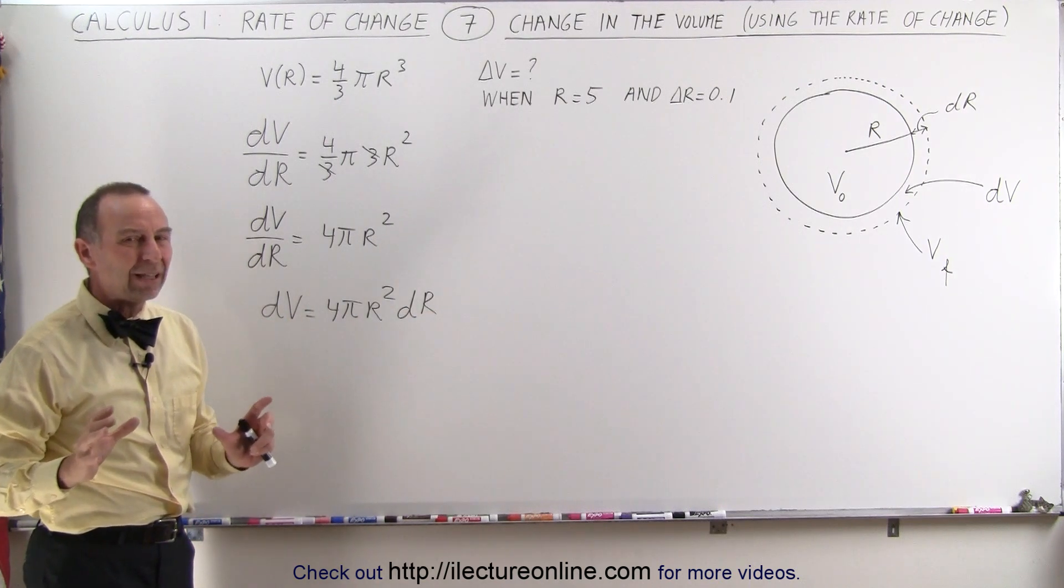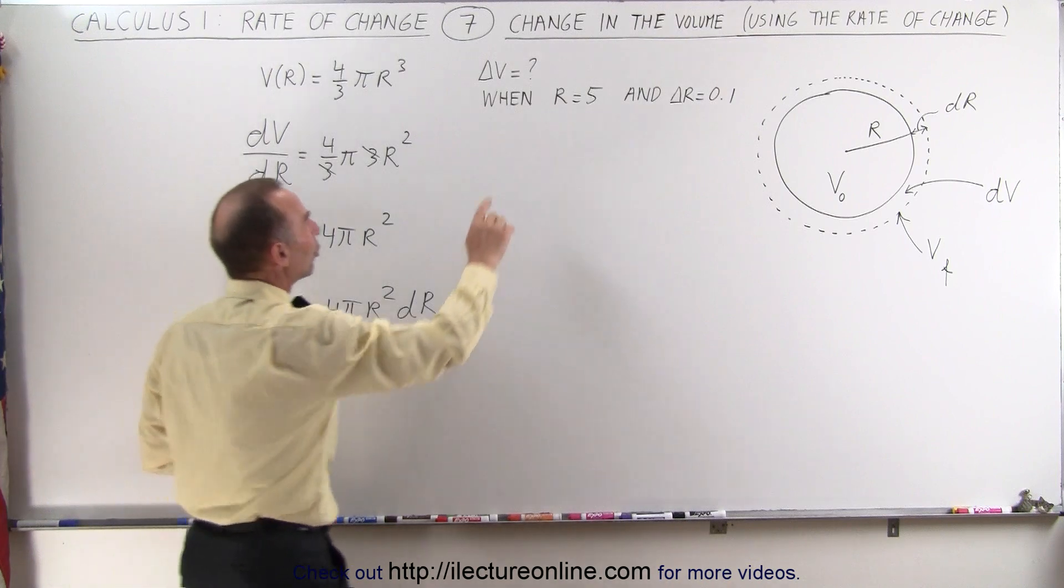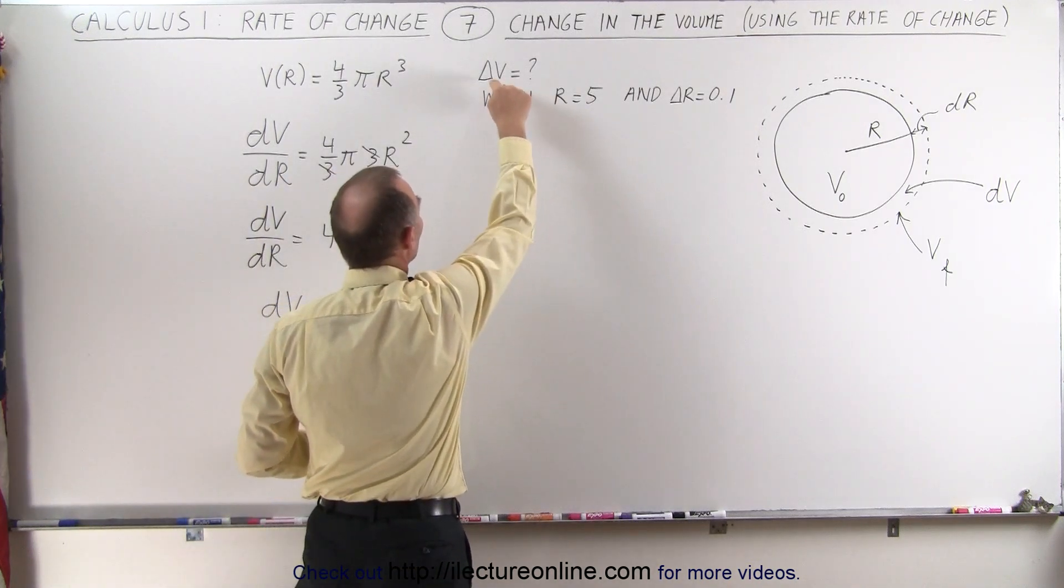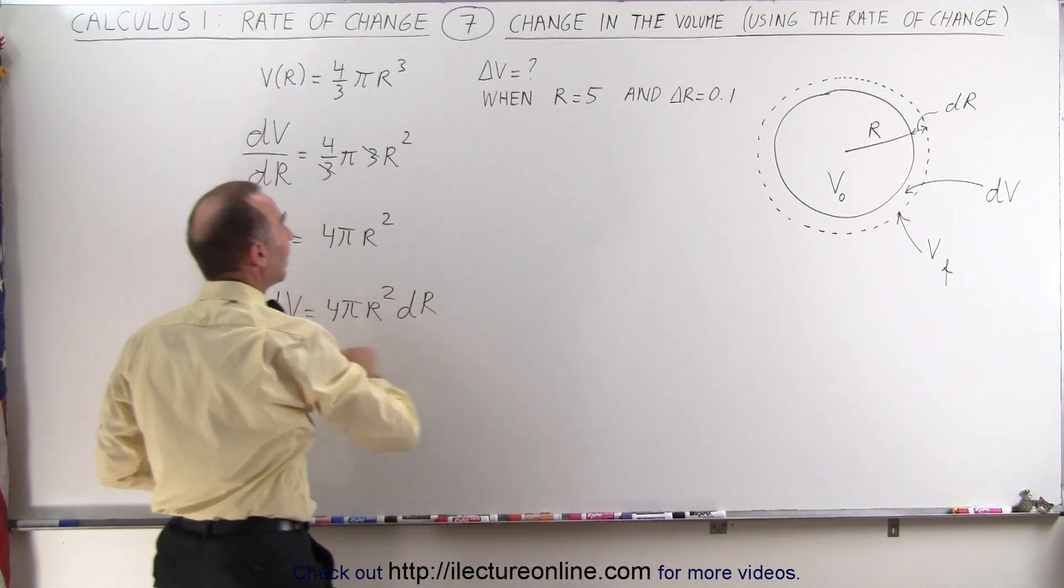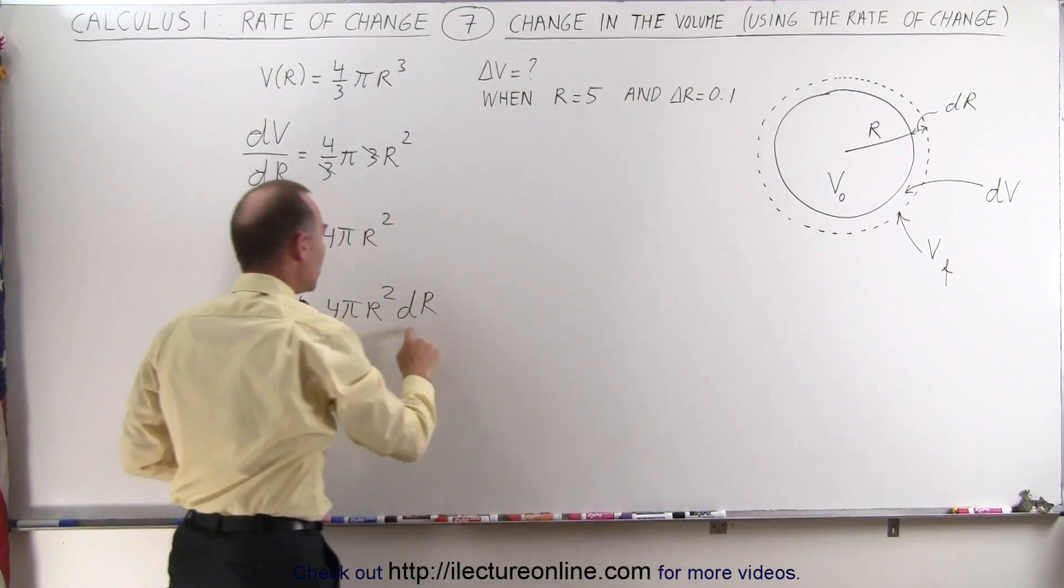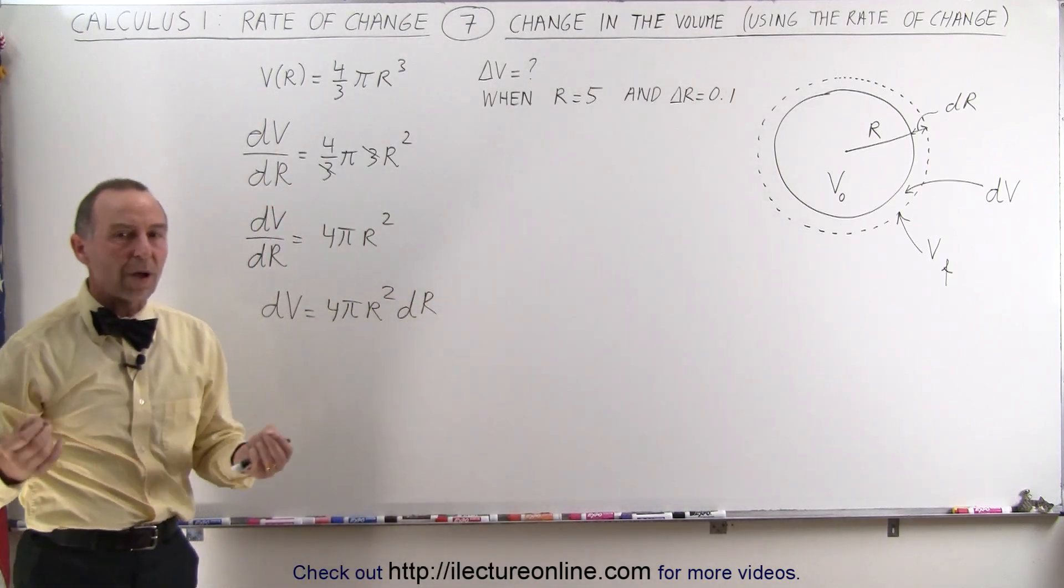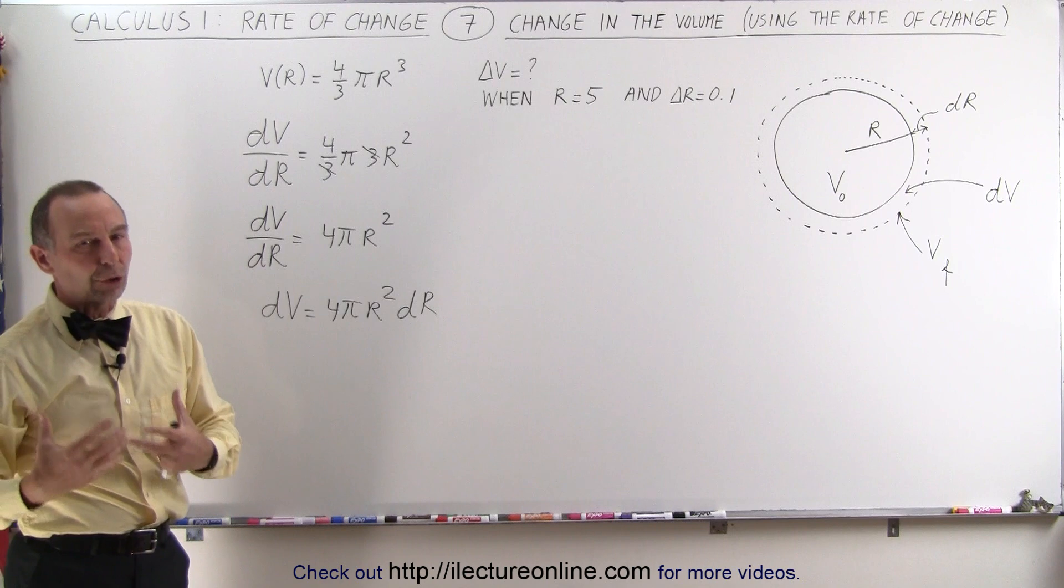But it's sufficiently close enough to saying that we can almost interchange the change in the volume by dV and the change in the radius by dr, because if we keep them small enough, it's close. It's a very good approximation.